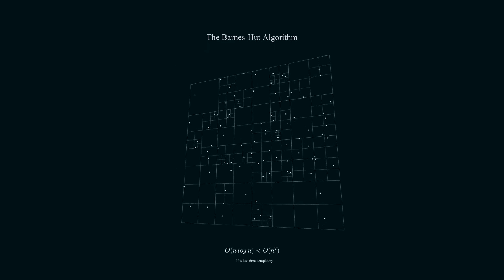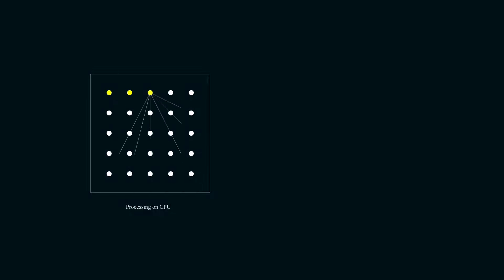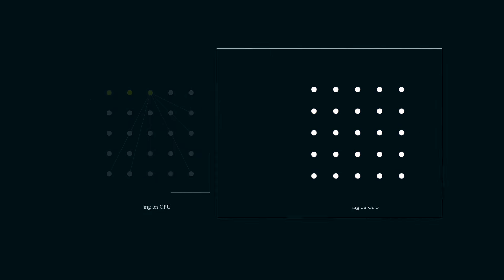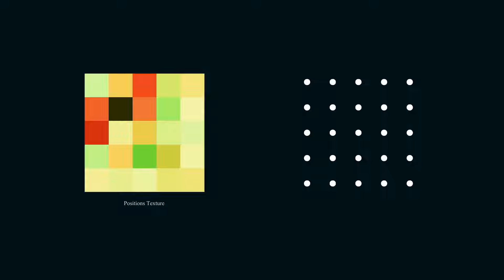With the help of the Barnes-Hut algorithm, I went from 500 to 5,000 particles. But can I go further? No matter what algorithm I use, as long as I'm running the calculations through the CPU, I'm bounded to processing particles one by one.